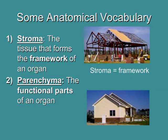Before we look at specific lymphatic organs, we need to talk about two terms referring to their anatomy. The stroma is basically the tissue that forms the framework of an organ — like the steel girders forming the framework of a building. On the other hand, the parenchyma are the functional parts of an organ — like all the appliances, toilets, and sinks in a completed house. We have to have a structure or stroma in order to have a place for our parenchyma.